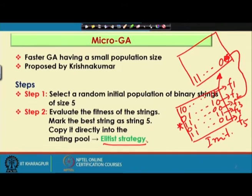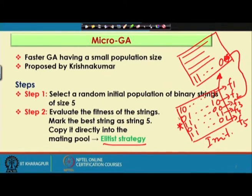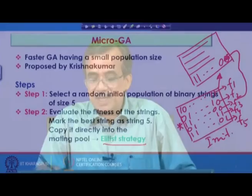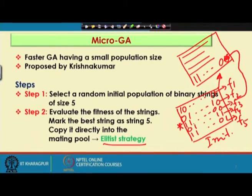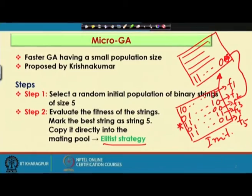Once you have this fifth string, you have four vacant positions in the population. To fill up these four vacant positions, we take the help of tournament selection. Supposing we select a tournament size of 2 — that means at a time, any two solutions are selected at random and we find out the better one in terms of fitness. The already-found best solution, which has been copied as an elite, will also participate in tournament selection. Playing tournament four times gives four GA strings for the mating pool.